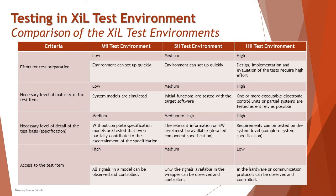The necessary level of details of the test basis refers to what information you are deriving your test cases from in the specification. Everything here starts at medium at minimum. For Mill it is medium — without complete specification, models are tested that partially contribute to the ascertainment of the specification. Zill is medium to high depending on software configurations — relevant information on software level and detailed component specification must be available. Hill is absolutely high — requirements are tested at the system level, so complete system specification must be present and well maintained, otherwise you will not be able to execute test cases in the Hill test environment.